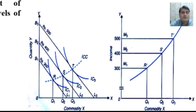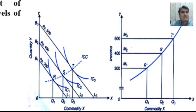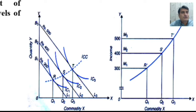How do we derive the Engel Curve from the Income Consumption Curve? We place the quantity which the consumer has preferred at the given level of income. We plot the quantity of X commodity on the X axis and the given income of the consumer on the Y axis. When income is 300, the consumer purchases OQ1 of X commodity. As income increases from 300 to 400, the consumer purchases OQ2. As income increases from 400 to 500, the quantity demanded for X commodity increases from OQ2 to OQ3. By joining all these points, we get a curve that is called the Engel Curve.